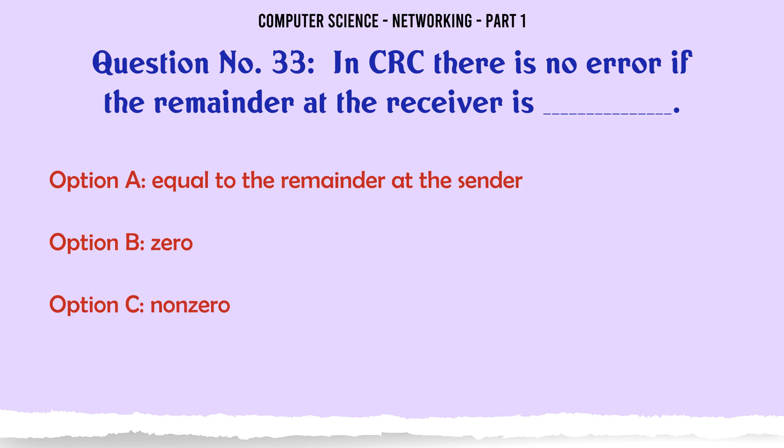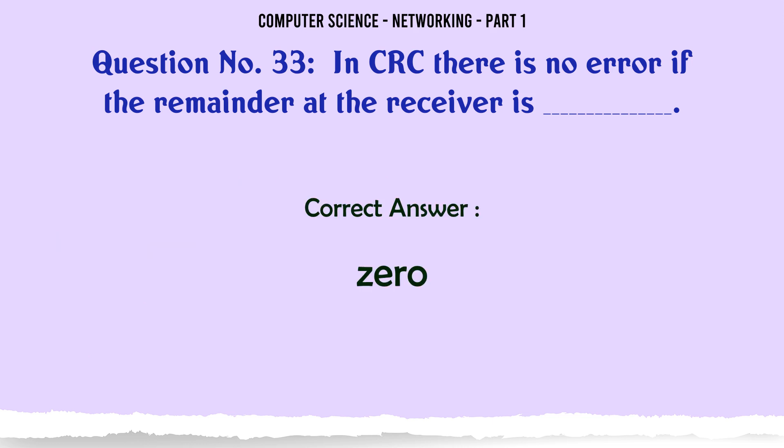In CRC there is no error if the remainder at the receiver is: A. Equal to the remainder at the sender. B. Zero. C. Nonzero. D. The quotient at the sender. The correct answer is: Zero.